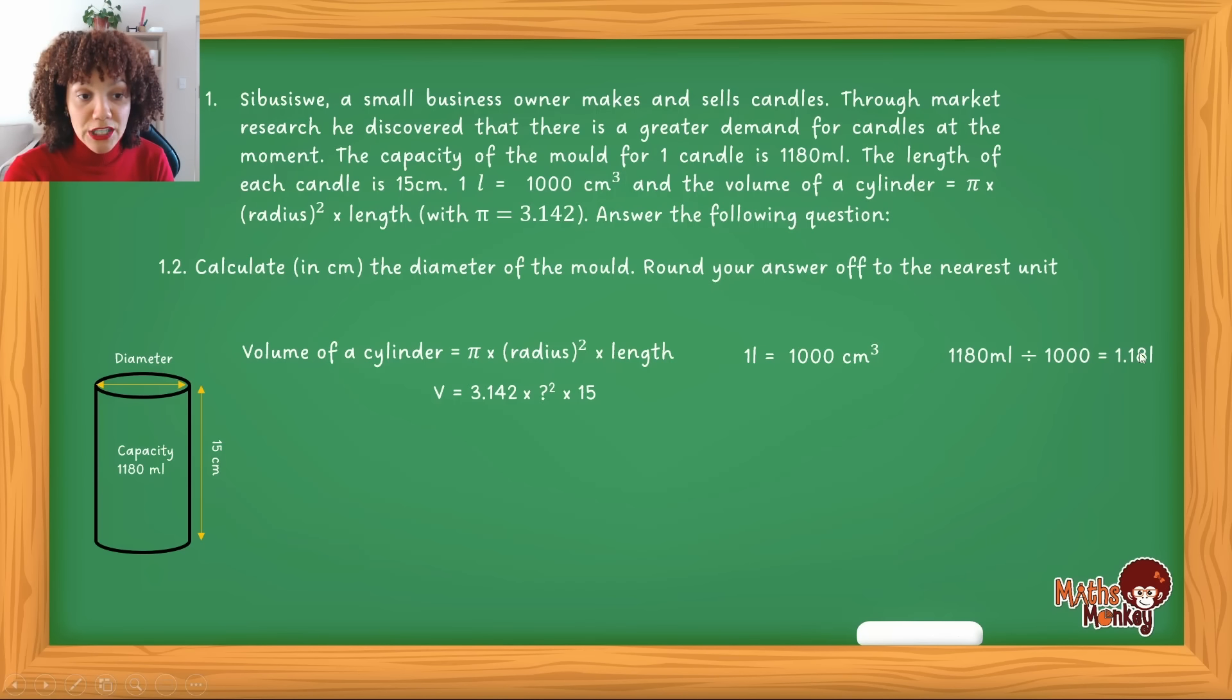So what is essentially happening here is I'm converting this capacity that's given in milliliters to liters. And the reason I'm doing that is so that I can use the LVN method to actually calculate the volume.